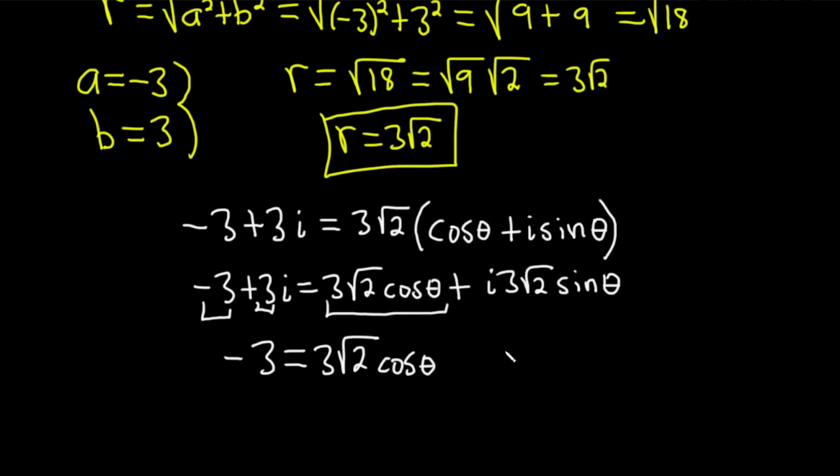And then the imaginary part is 3. And that's equal to the imaginary part on the right-hand side, which is 3 root 2 sine theta. Very nice.